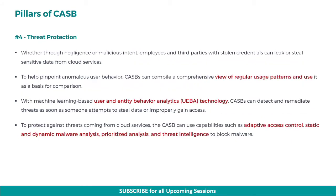And finally, the fourth pillar is threat protection. Whether through negligence or malicious intent, employees and third parties with stolen credentials can leak or steal sensitive data from cloud services. To help pinpoint anomalous user behavior, CASB can compile a comprehensive view of regular usage patterns and use it as a basis for comparison. With machine learning-based user and entity behavior analytics technology, CASB can detect and remediate threats as soon as someone attempts to steal data or improperly gain access. To protect against threats coming from cloud services, the CASB can use capabilities such as adaptive access control, static and dynamic malware analysis, prioritized analysis, and threat intelligence to block malware.